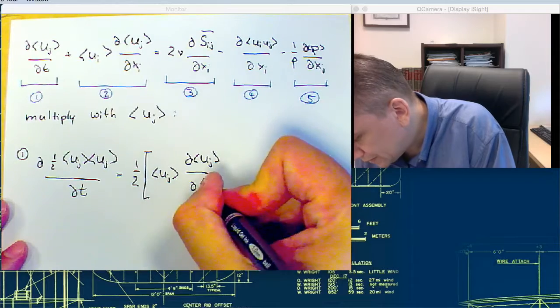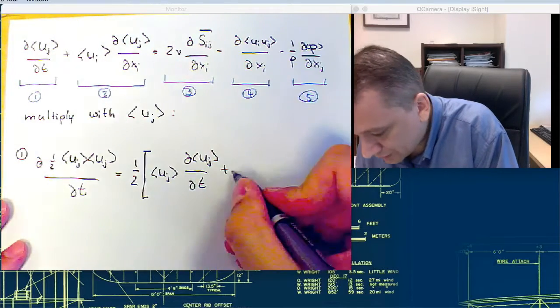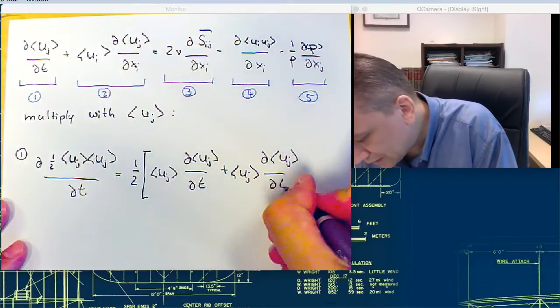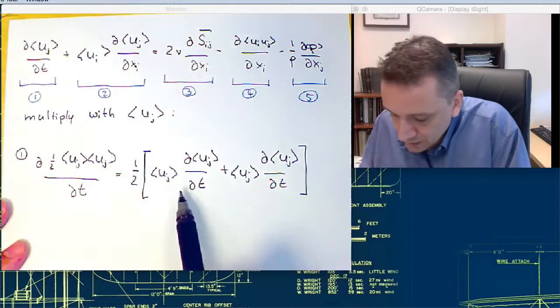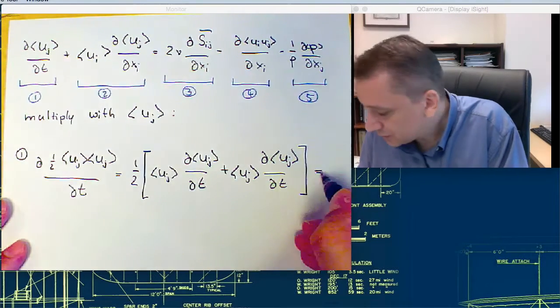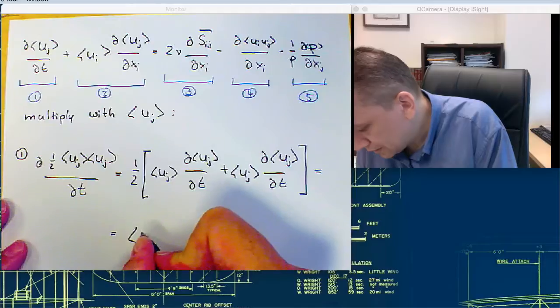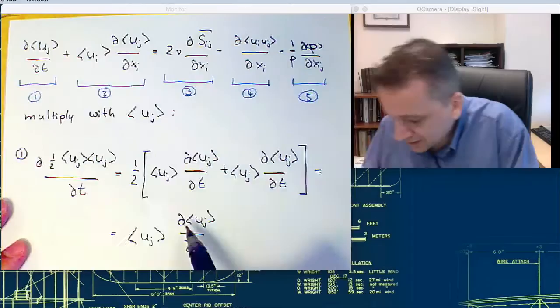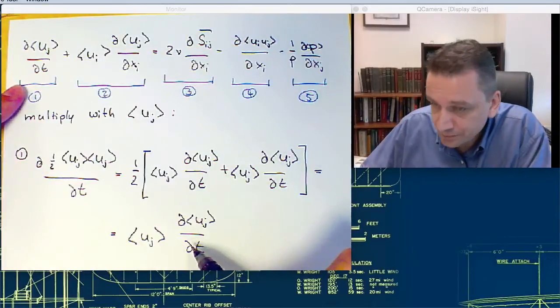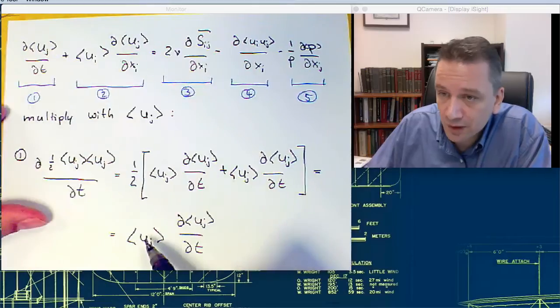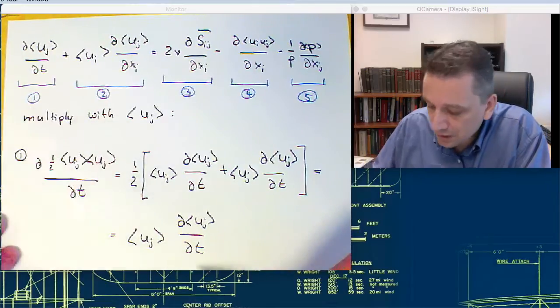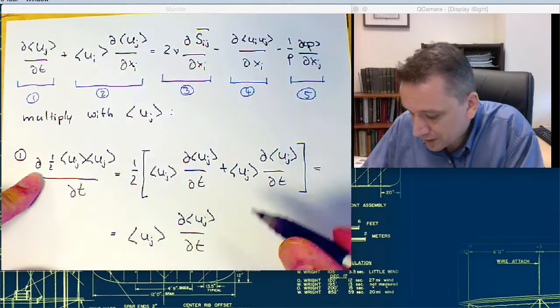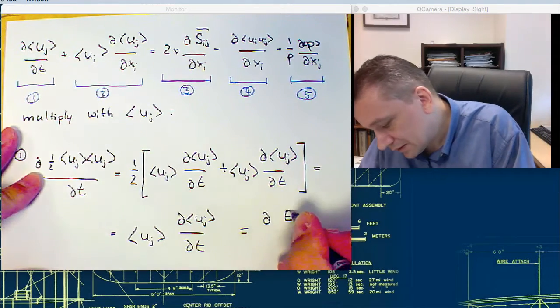d uj dt plus now the other term, this is going to look exactly the same: d uj dt. So you have twice the same term times one half, so this one becomes uj dt. This is exactly the term that you want to have for term 1, where we have this term over here multiplied with the mean velocity uj.